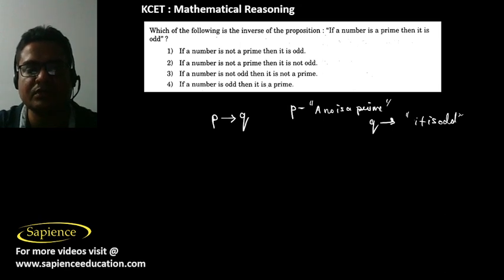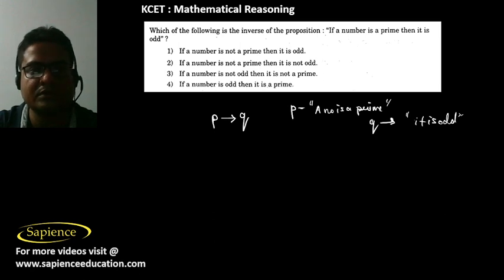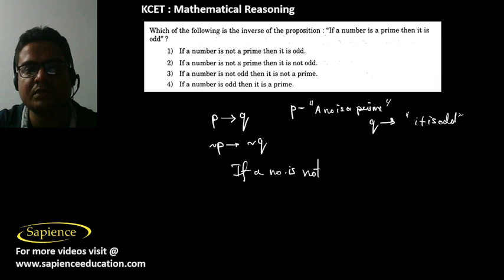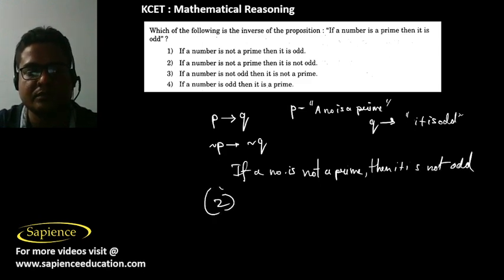Option 2 is the correct answer. The inverse of this statement P then Q is not P then not Q — meaning if a number is not prime, then it is not odd. So option 2 is the correct answer.